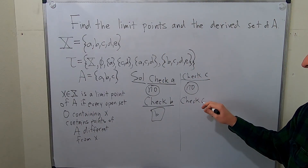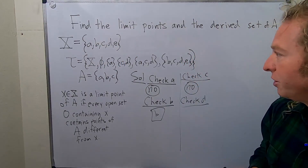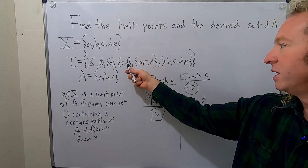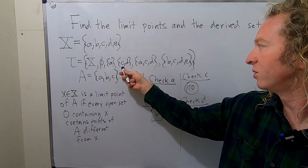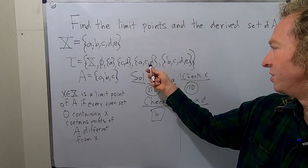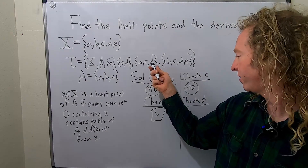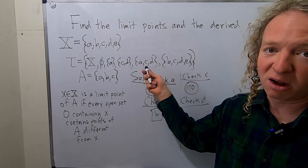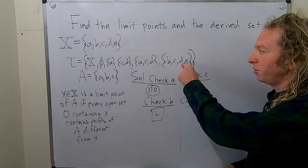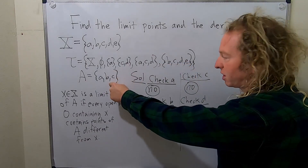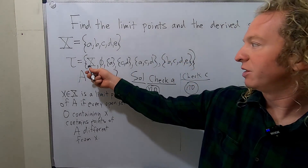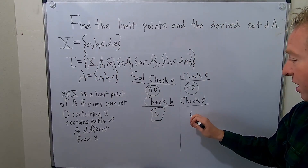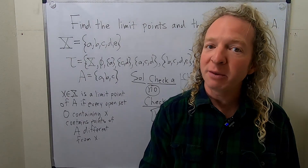Let's check little D. Here is an open set containing D — it contains C, which is in A, so that's good. Here is another open set containing D — it contains A and C, points of A different from D. Another open set with D also contains C. And capital X certainly contains points of A different from little D. So little D is a limit point.